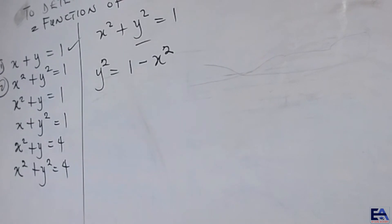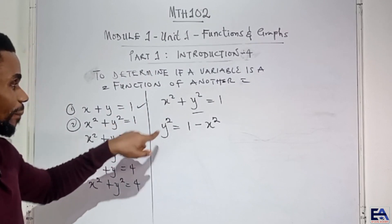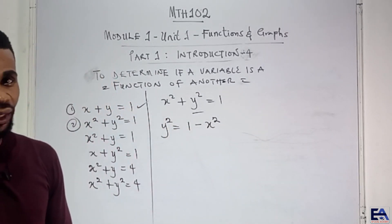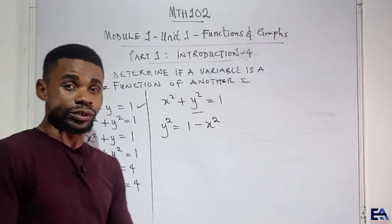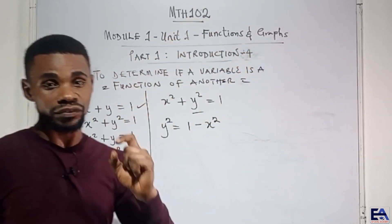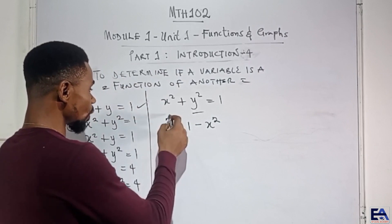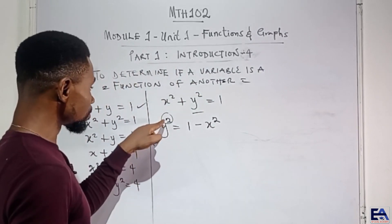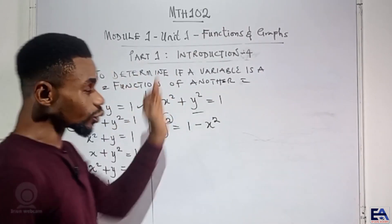As we have it here, we cannot say that y depends on x. Instead, we can rather say y squared depends on x squared, but that is not really mathematically ideal. When we talk about a variable depending on another, we are talking about the variable itself, not the power or exponent of that variable. So in an attempt to make that happen, mathematics says when we have a power on one side, that power goes to the other side as a root — as a square root if it's raised to power 2, or a cube root if it's raised to power 3.